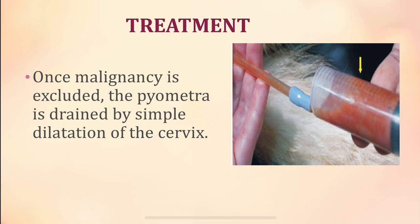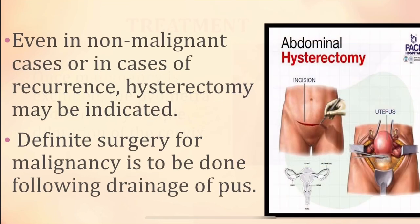Treatment: once malignancy is excluded by performing curettage and pyometra is confirmed as the cause, you have to drain it by simple dilatation of the cervix. Even in non-malignant cases or in cases where there is recurrence of pyometra — since it is more commonly observed in post-menopausal women — hysterectomy can be indicated. Hysterectomy is a surgical procedure involving removal of the uterus. Definitive surgery for malignancy is done following the treatment of pyometra.